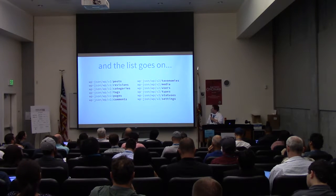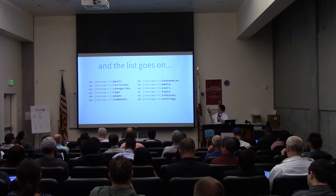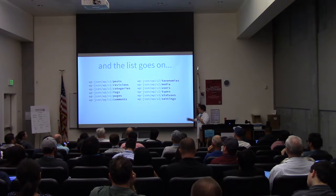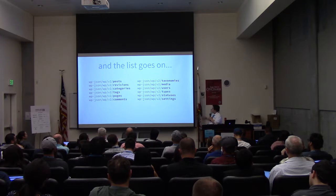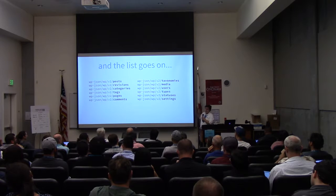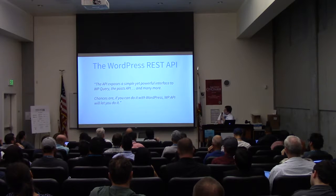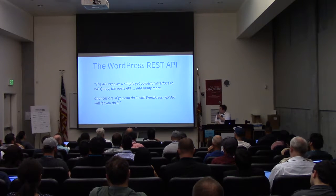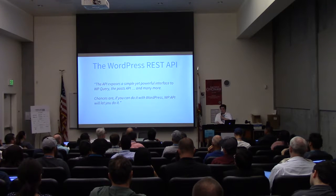The information goes two directions as well — it's not just GET requests. You can also update things, though some things require authentication. If I wanted to update a user, I could send a POST request to the user endpoint, specify which user, specify what I want to update, and specify the new information. The API exposes a simple yet powerful interface to WP Query, the Post API, and many more. Chances are, if you can do it with WordPress, you can do it with the API.